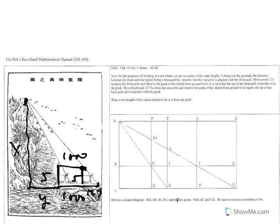Whereas when I'm closer, if I use this other pole, I only have to go back 123 boo to look up and see the tip of the island. And the question is really, how tall is the island?